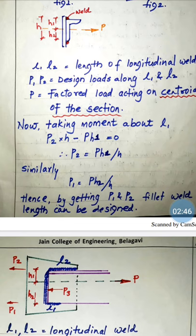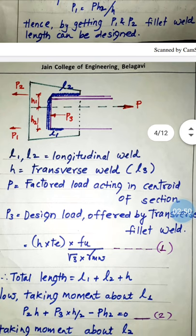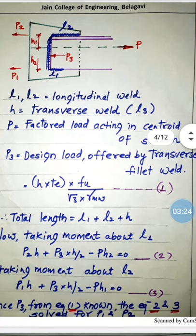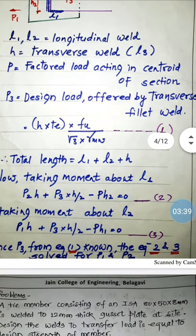In Figure 2, l1 and l2 are the longitudinal fillet weld and lh is the transverse weld. The total forces are p1, p2, and p3 — where p1 is carried by l1, p2 by l2, and p3 by the transverse fillet weld. Since I know the height of the section from the steel table, I can find p3 as: p3 = h × te × fu / (√3 × γmw). The total length of weld is l1 + l2 + h.